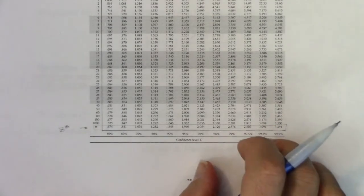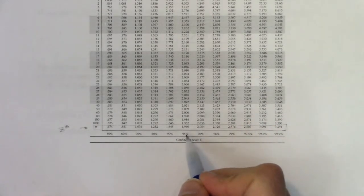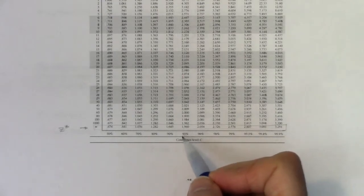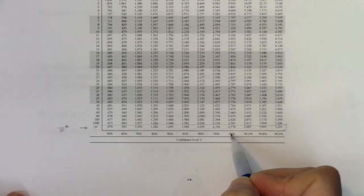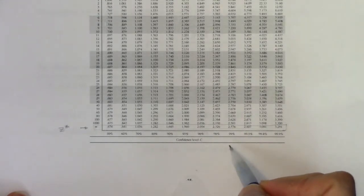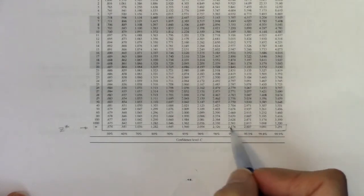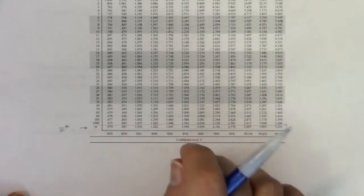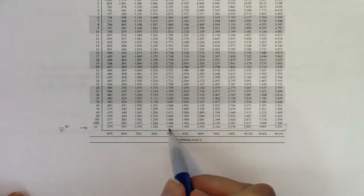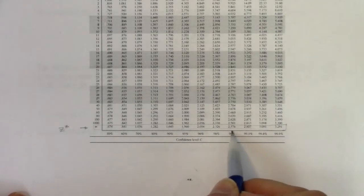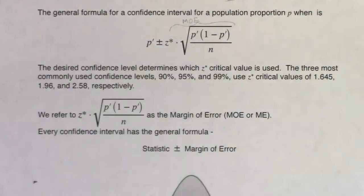Looking at the table: above 90% you see 1.645, above 95% you see 1.960, and above 99% you see 2.576. These critical values are calculated using inverse normal with certain percentiles on your calculator. We'll return to that, but those are your three most common critical values: 1.645, 1.96, and 2.576.